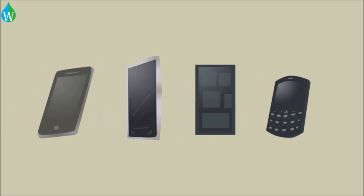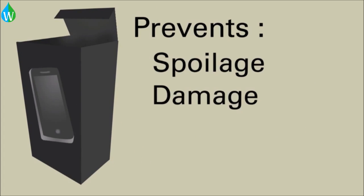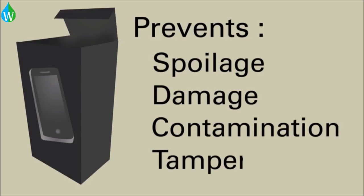Many products require the use of packaging as well to prevent spoilage, damage, contamination, and tampering. By considering the materials these phones are made of or reducing the number used in their manufacture, this can lower some of the energy requirements.